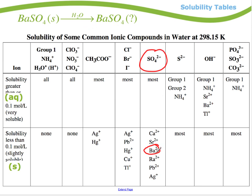If I dump those in water at 298.15 Kelvin, which is about 25 Celsius, then it's a solid. Okay. So barium and sulfate, if they are in solution, they will be a solid.